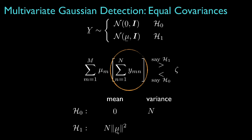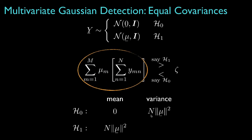Because the variance for each element of the observation is equal to one under both hypotheses, the variance for the inner summation will be equal to the number of independent observations, and the variance for the total sum will be the sum of the squares of each element of the mean vector times the total number of independent observations. And because the covariance is the same for both hypotheses, the variance will be the same for hypothesis one.